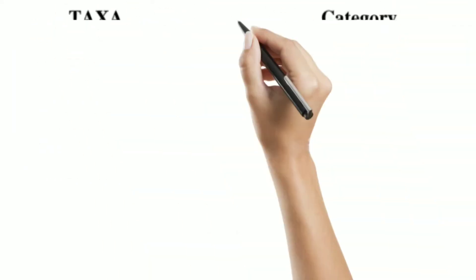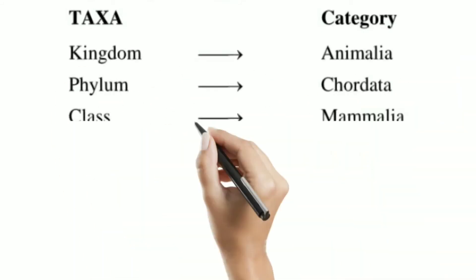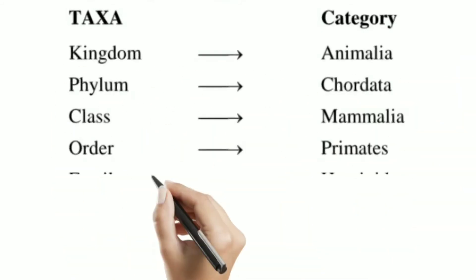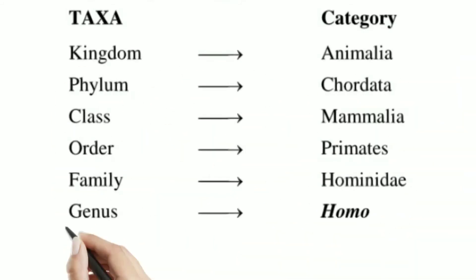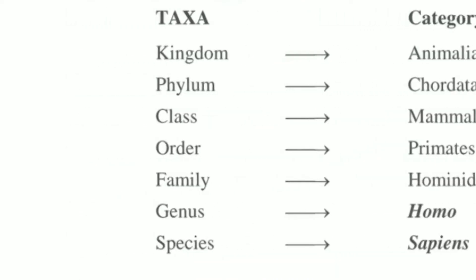If we talk about humans, we belong to kingdom Animalia, our phylum is Chordata, class is Mammalia, order is Primates, family is Hominidae, genus is Homo, and our species is sapiens.